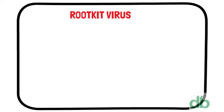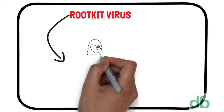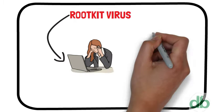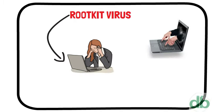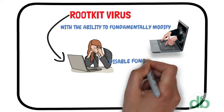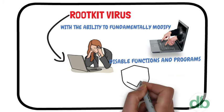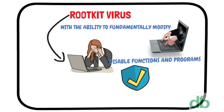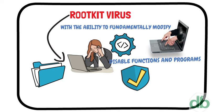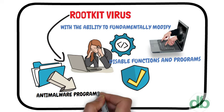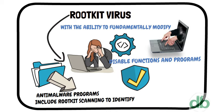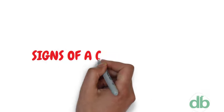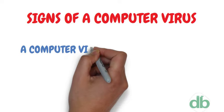10. Rootkit virus: This is a type of malware that installs an unauthorized rootkit on an infected system, giving attackers full control of the system with the ability to fundamentally modify or disable functions and programs. Rootkit viruses were designed to bypass antivirus software, which typically scanned only applications and files. More recent versions of major antivirus and anti-malware programs include rootkit scanning to identify and mitigate these types of viruses.